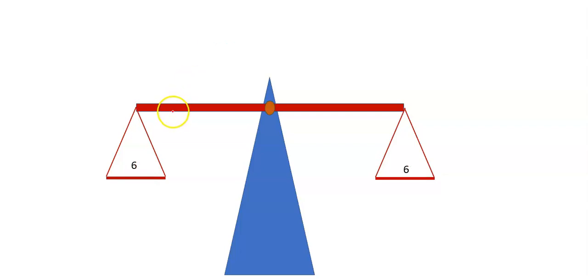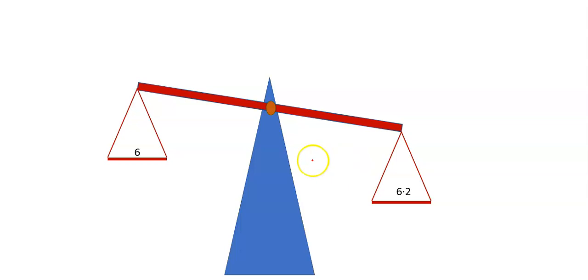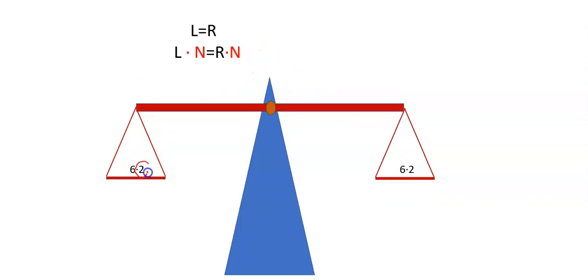Same for multiplication. So if you have a balanced scale, and let's say we double the right-hand side times 2, again, it's going to be heavier. It's not going to be equal anymore. But if we also do the same thing to the left-hand side, it's going to be balanced. So the equal sign can stay.